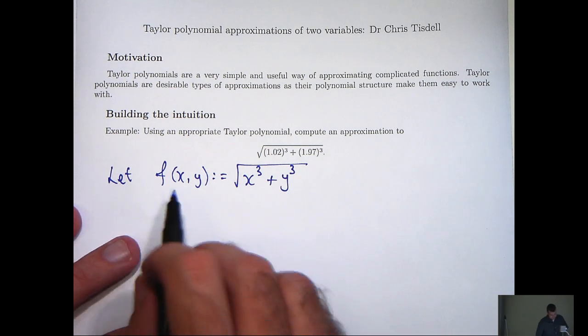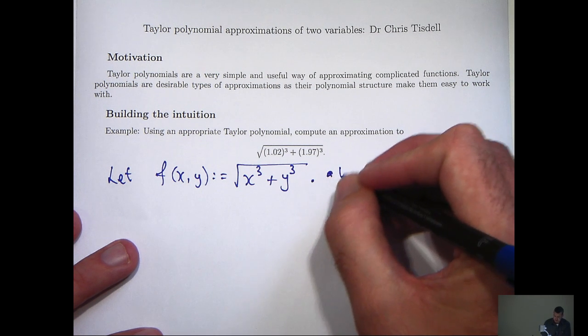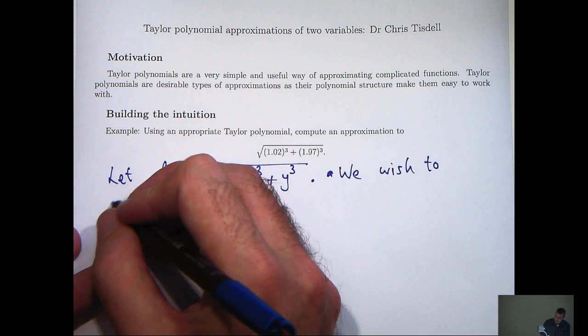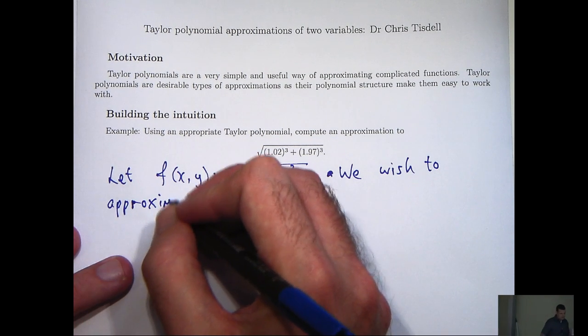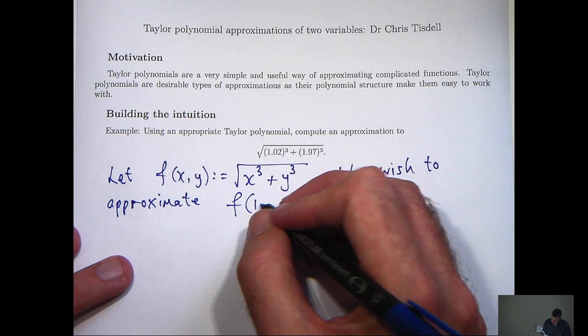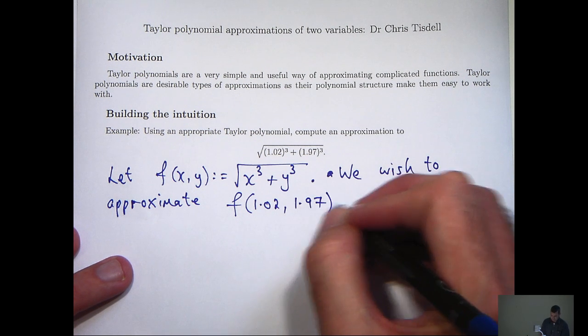So defining f in this way, what we would like to do, we wish to approximate f of 1.02 comma 1.97.